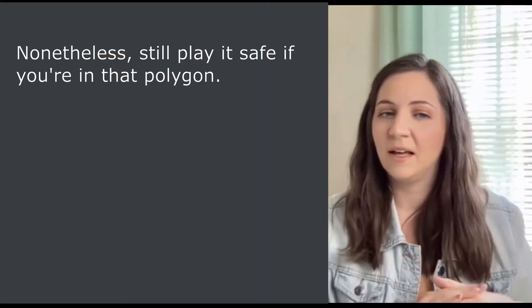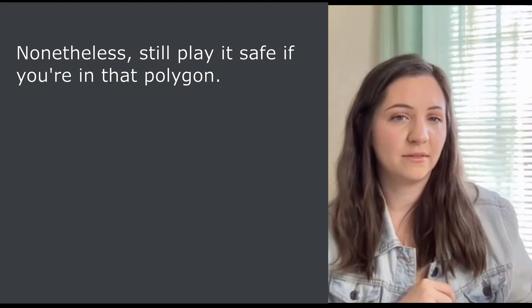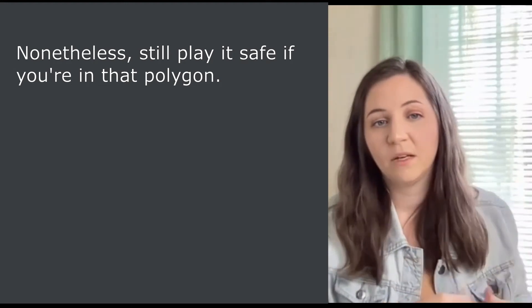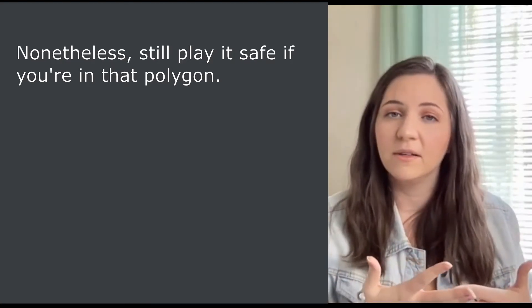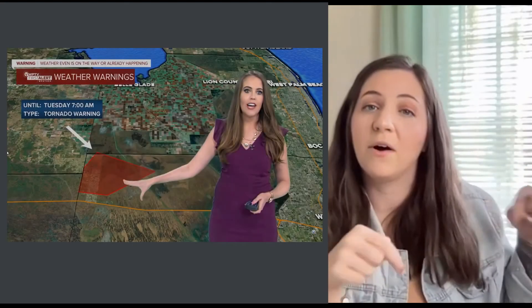Let's look at the next clip, and the word I want you to focus on is "polygons." Nonetheless, still play it safe if you're in that polygon. So the weather radar and software they use generates special shapes on the map, and these shapes are called polygons — they're just random shapes. Weather reporters use these when there is severe weather because it gives them an estimate of where the action will be. So if you are inside of the polygon, you are at risk of severe weather.